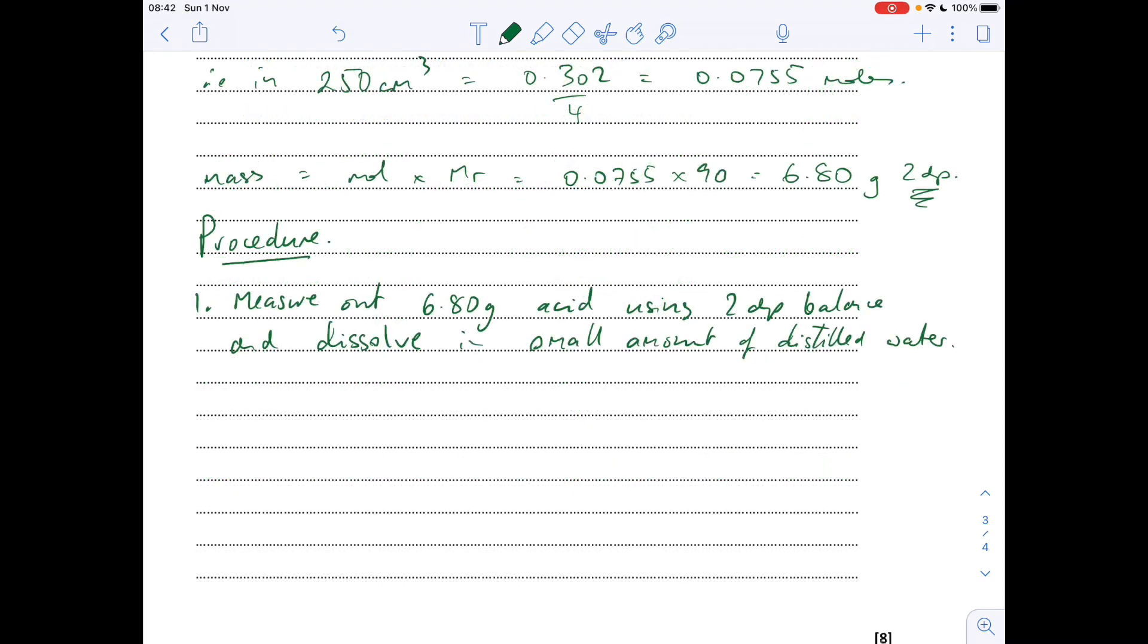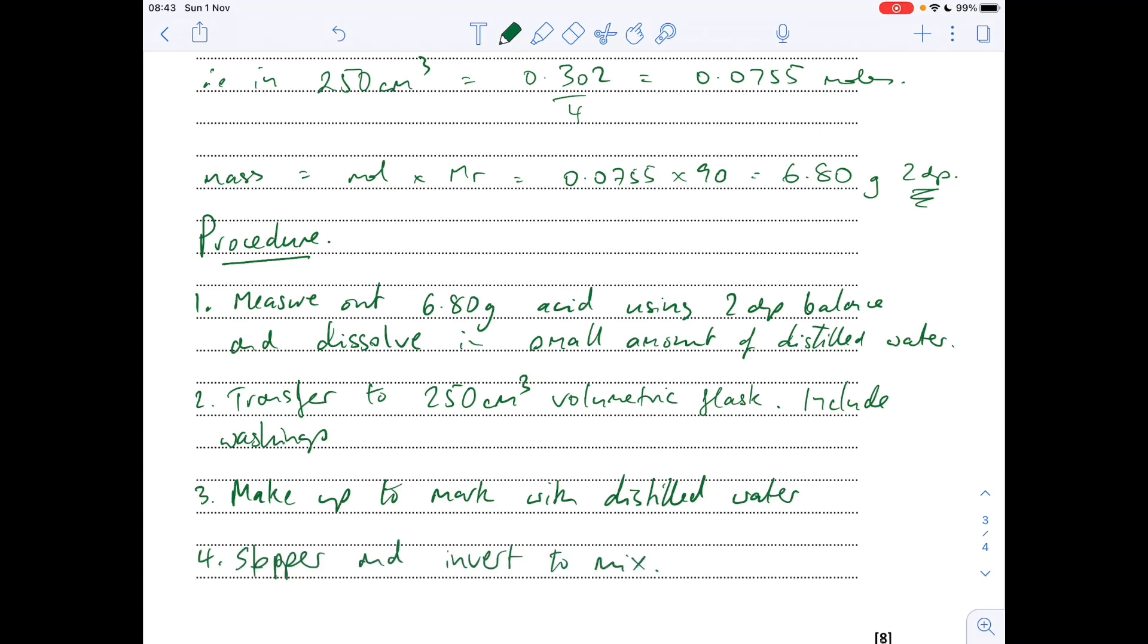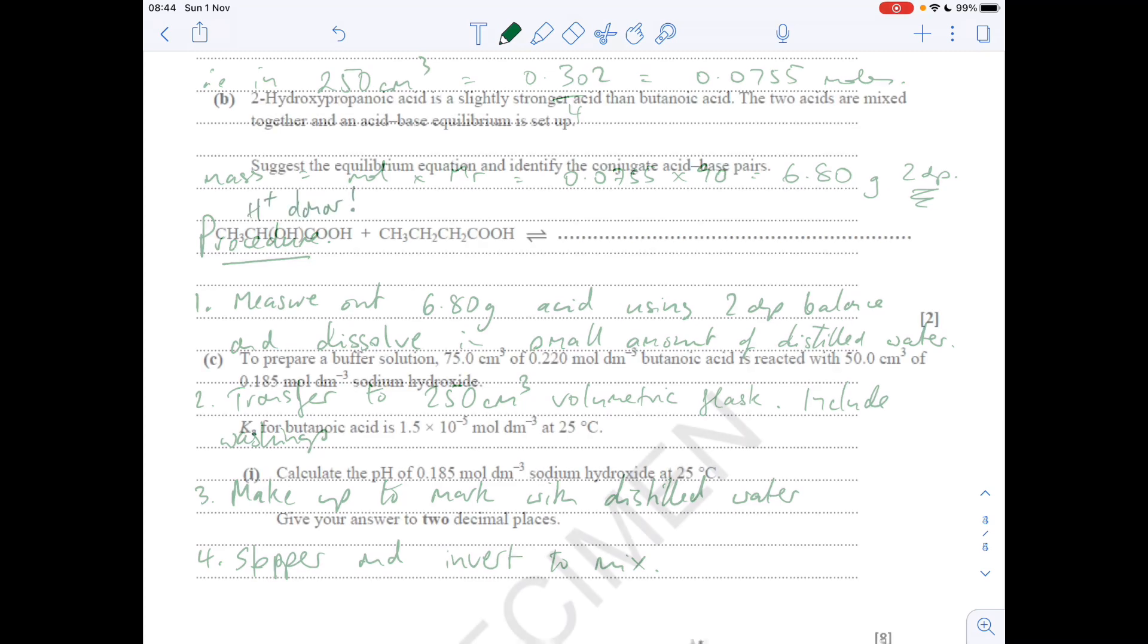Moving on to the procedure: the first thing the student would need to do is measure those 6.80 grams of the acid out using a two decimal place balance. They're going to dissolve that in a small amount of distilled water or deionized water. They're then going to transfer that to a 250 cm³ volumetric flask and they're going to rinse out the beaker and include the washings. They'll then make it up to the mark with distilled water and finally they'll stopper and invert or shake to mix thoroughly.